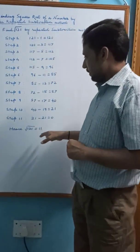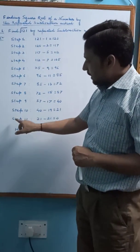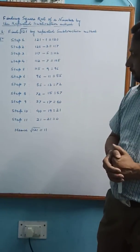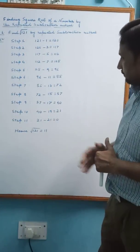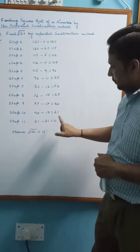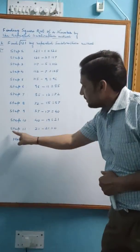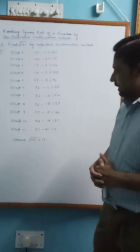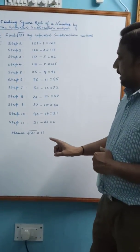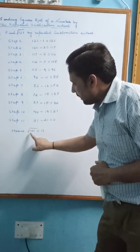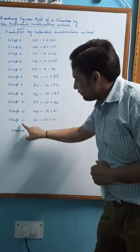We reach 0 in step 11. We see 0 is obtained in step 11. So, the square root of 121 is 11.